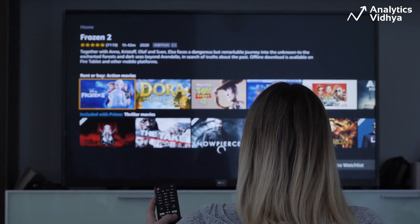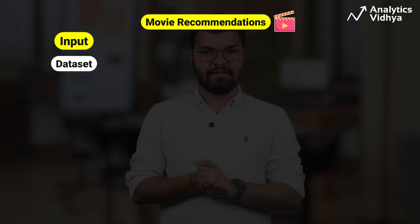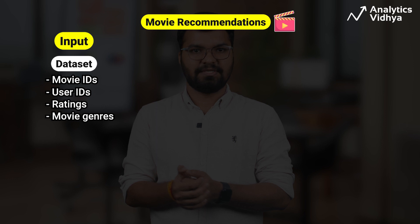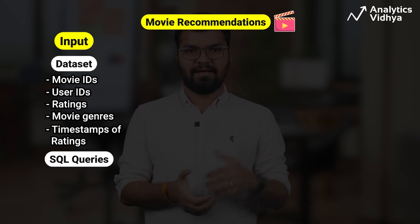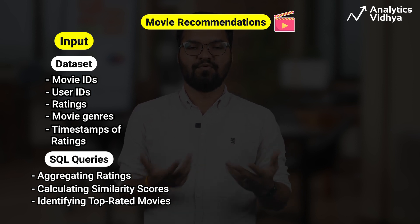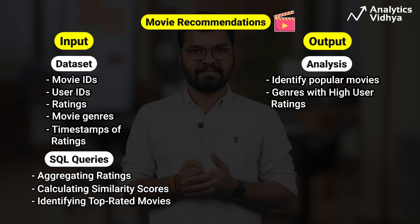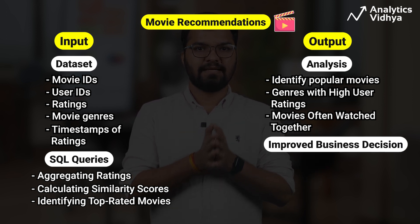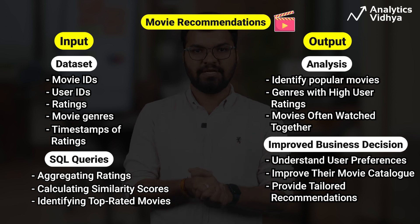Our sixth project is the Movie Recommendation System. The goal is to delve into a user's movie-watching patterns and provide personalized movie suggestions, enhancing the user's experience. We'll work with a dataset that includes movie IDs, user IDs, ratings, movie genres, and timestamps of ratings. After pre-processing the data, SQL queries here involve aggregating ratings, creating similarity scores between movies and users, and identifying top-rated or similar movies. This recommendation system can identify popular movies, genres with high user ratings, and movies frequently watched together — helping platforms understand user preferences, improve their movie catalog, and provide tailored recommendations.